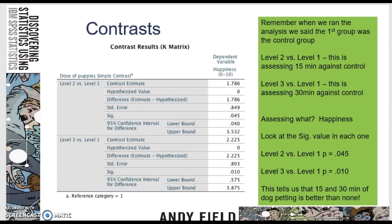So remember when we run an ANCOVA, we don't get the option to do the planned contrast like we did in the ANOVA, but we did choose contrast, and we chose simple, and we defined our first group as being our control group. That was the steps that we went through when we did the analysis.